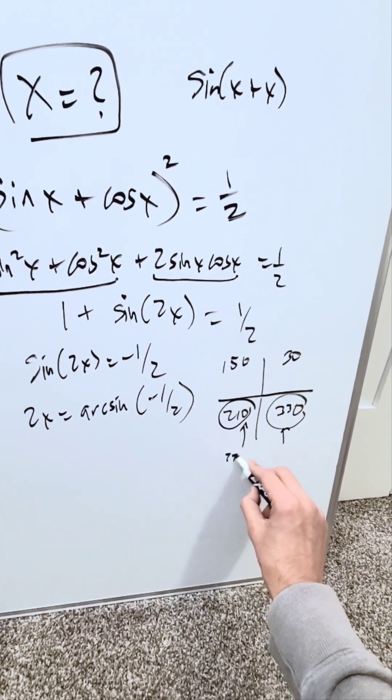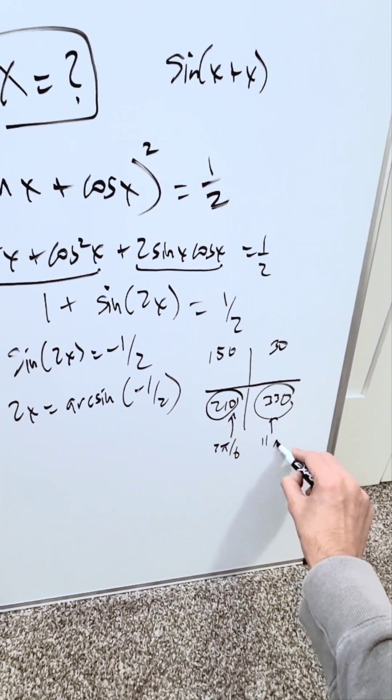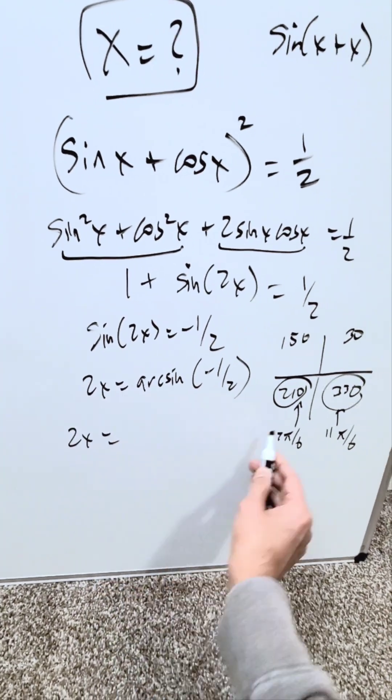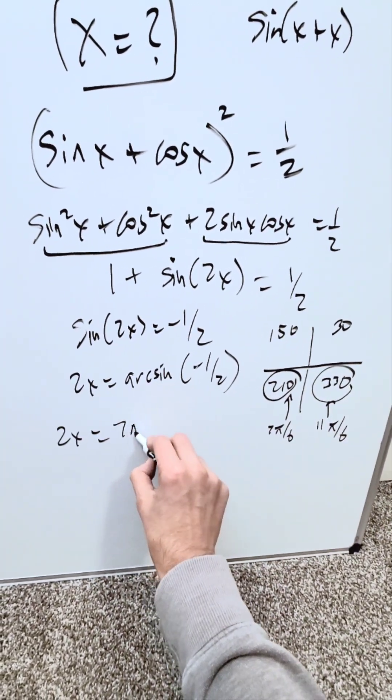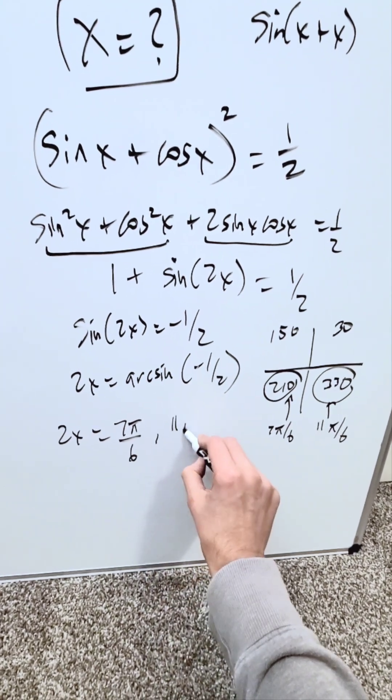210 is 7 pi over 6. 330 is 11 pi over 6. So now you know 2x is equal to 210 and 330, which you will write as 7 pi over 6 comma 11 pi over 6.